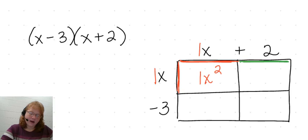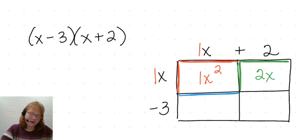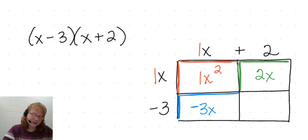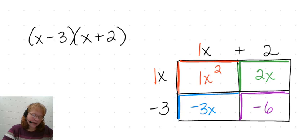For the second rectangle, I have 2 times 1x, and that gives me 2x. For this third rectangle, this length is 1x, and this is where it's a little unusual — we can't really have a length of negative 3. But we're still going to use the area model as a structure to help us multiply. So 1x times negative 3 gives me negative 3x. And then for our last rectangle, we have 2 times negative 3, and 2 times negative 3 gives us negative 6.